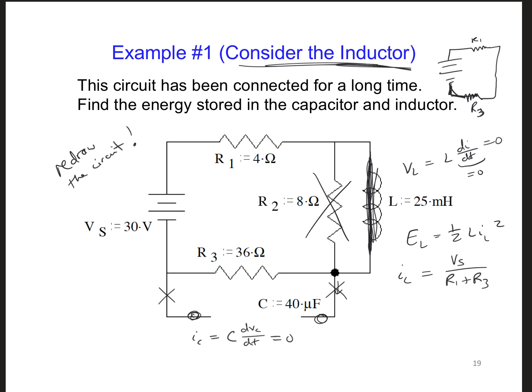And that turns out to be 0.75 amps. So if I plug that into our energy equation, I'm going to get 7.03 or so millijoules.